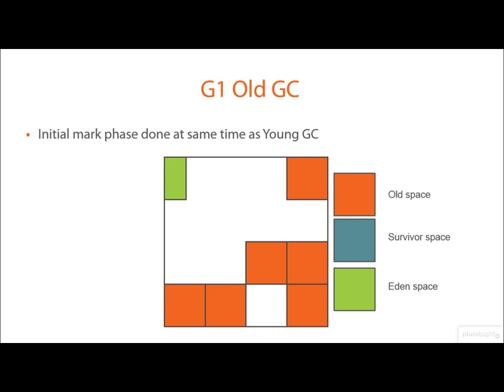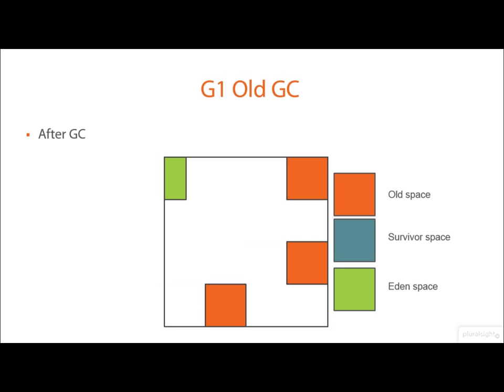For the old GC, a similar idea. Again, we have memory in Eden space and memory in old space. When a major collection is done, it collects memory in old space — that memory is discarded altogether. So we leave the Eden space alone in this case, and we've discarded the unused old space regions.